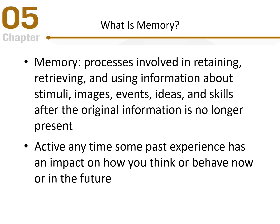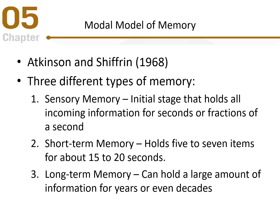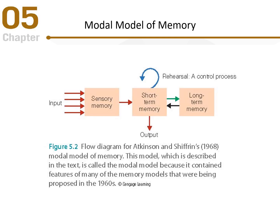Looking at a model of memory, we can consider one proposed by Atkinson and Shiffrin in 1968. They proposed three different types of memory: first, sensory memory, which is the initial stage holding incoming information from the environment for just a couple of seconds or a fraction of a second; then short-term memory, holding about five to seven items for 15 to 20 seconds; and finally long-term memory, which can hold a large amount of information for years or even decades. This is called a modal model of memory.